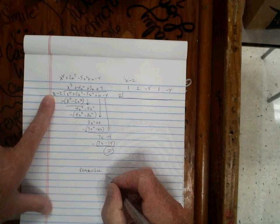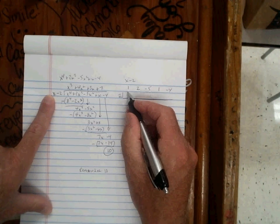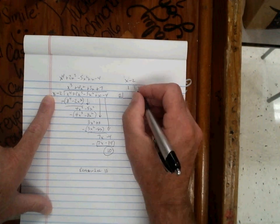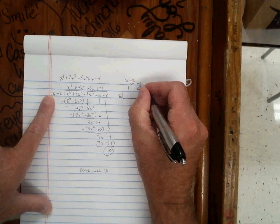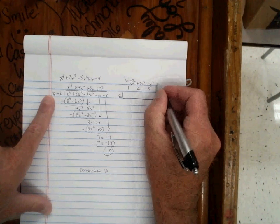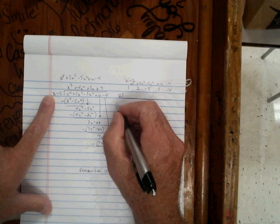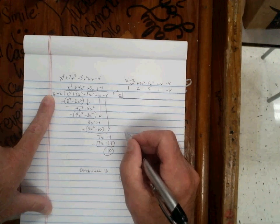So if this was synthetic division, this represents the x to the 4th plus 2x cubed minus 5x squared plus x minus 4. And this represents dividing by x minus 2.